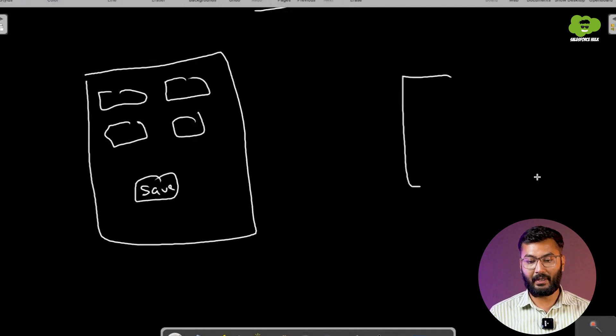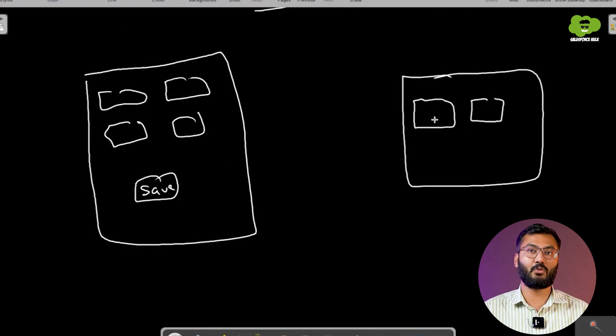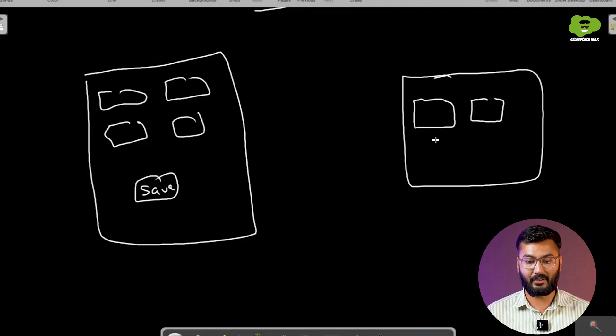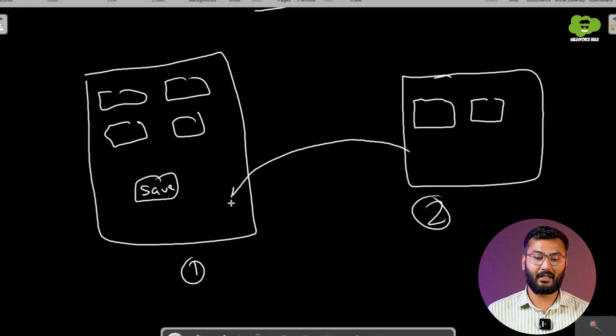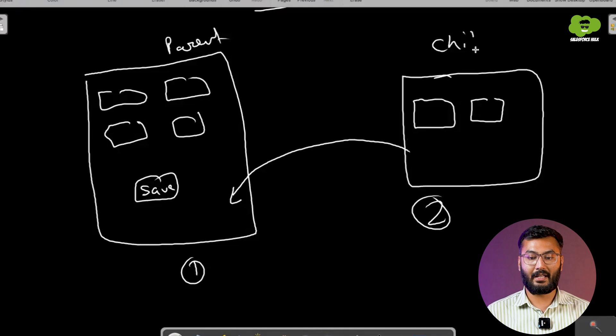Now let's implement this scenario practically. We need to create one component with some fields and a save button, and another component that shows a list of records — it won't be dynamic for now, as we'll cover that in future lectures. We are creating component one and component two, and then we will put component two inside component one, making it the parent-child relationship. Let's jump to VS Code and start creating those components.